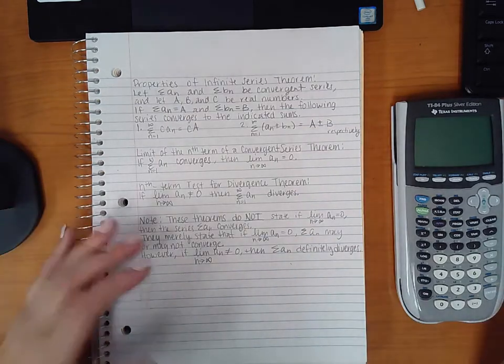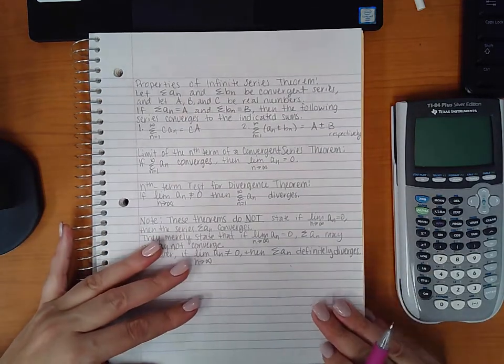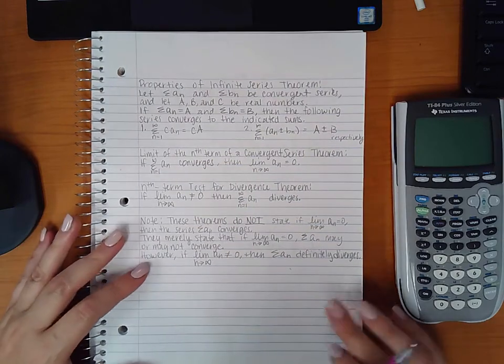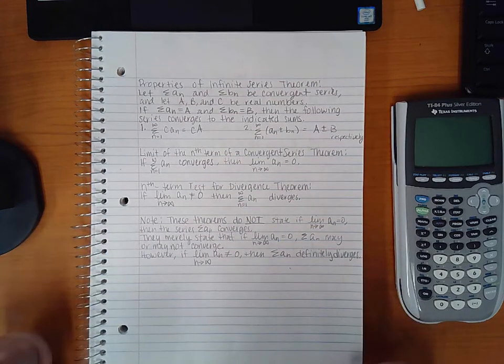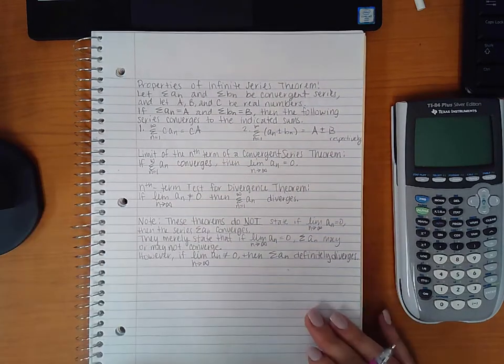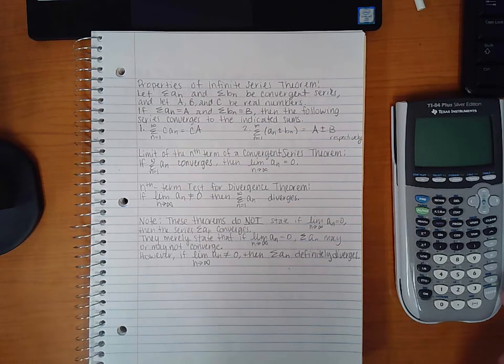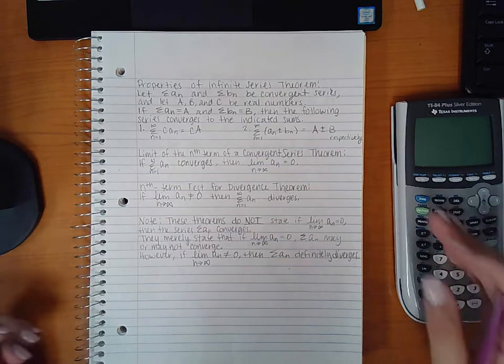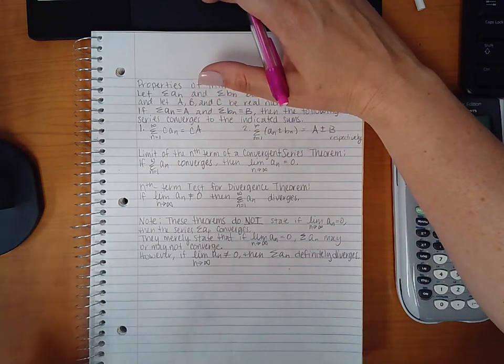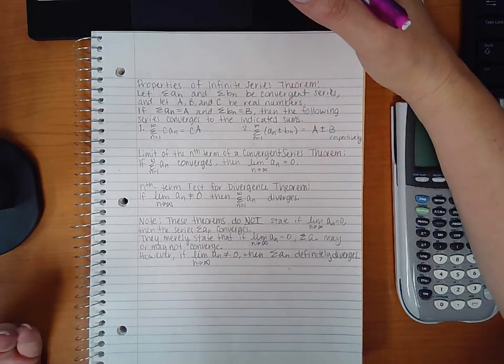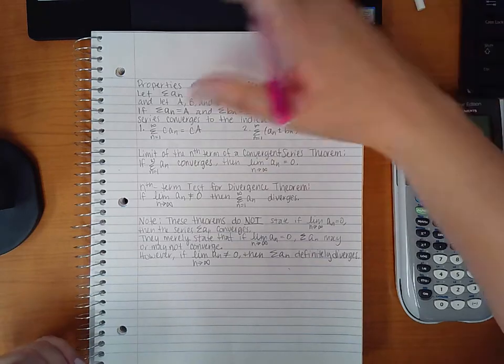However, if the limit does not equal zero of the nth term, then we know automatically that the series does diverge, which does come in handy because I would like to know right off the bat if some of these things diverge. There's no sense in applying any of these rules or theorems that we're going to learn if I didn't need to. So that's the end of 9.2 and we'll continue with 9.3 in another video.